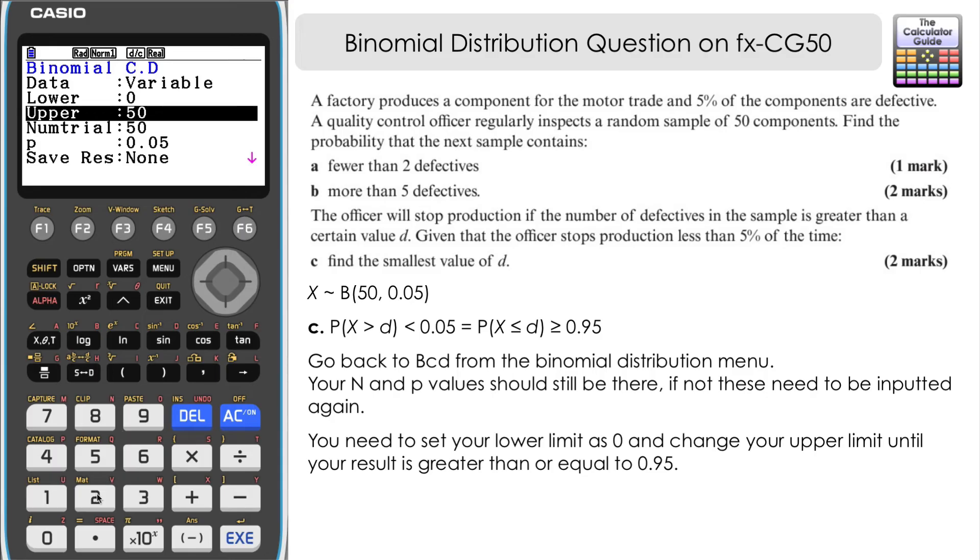And our upper limit, well, we're going to have to change this and trial a few different values until we get a result that is greater than 95%. I'm just going to start with three. We know it's not one because of the result that we got from part A. So you can try two if you want to, but I'm going to skip up to three. And we can see that that's yielded 0.76. That's about 76%. That's not quite high enough. We want the area to be 95% or more for the officers to stop production.